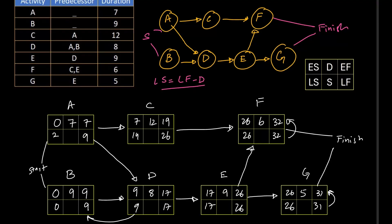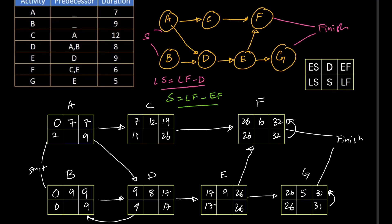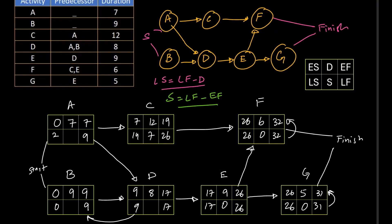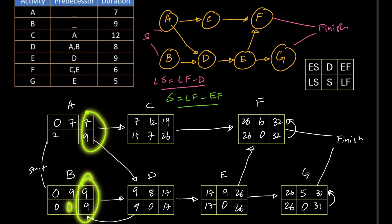Now finally we need to find out slack. Slack is calculated as LS minus ES, or equivalently LF minus EF. All activities in this project have a slack value of 0.